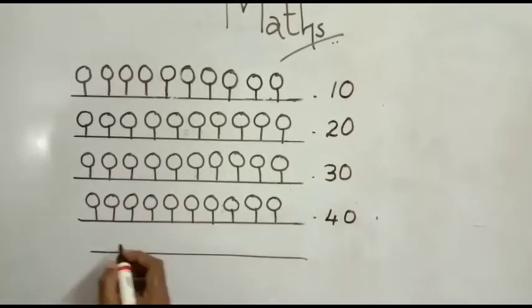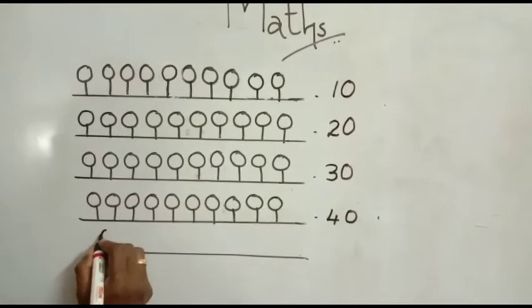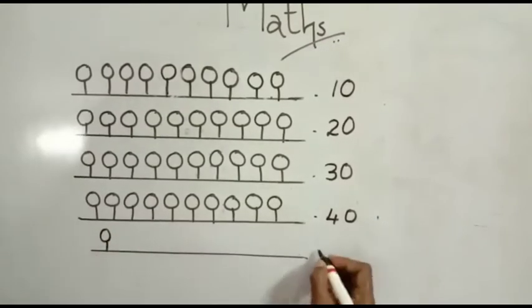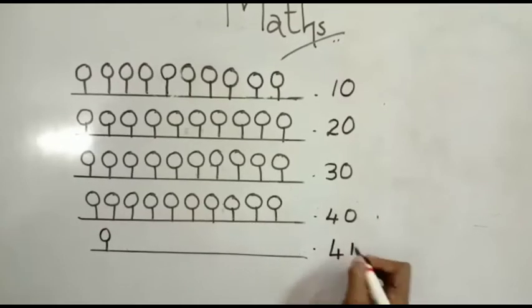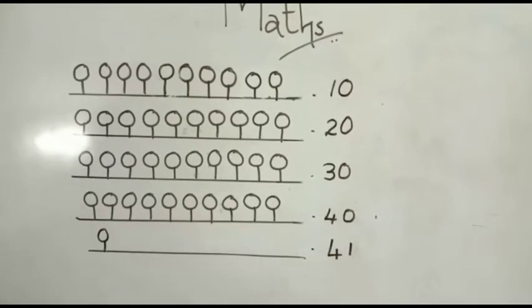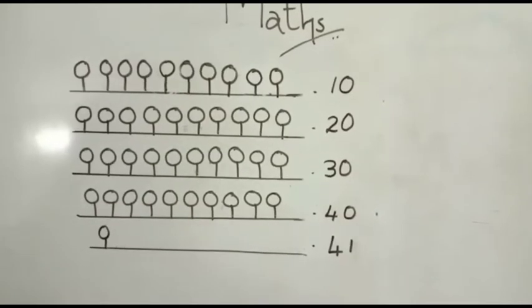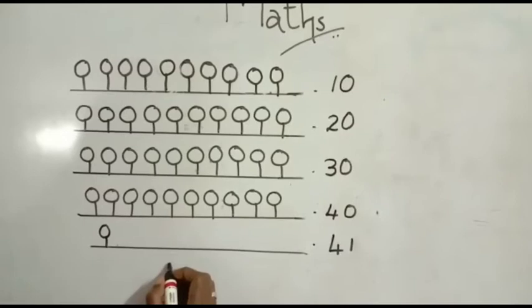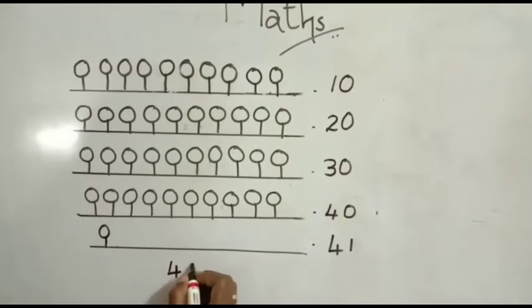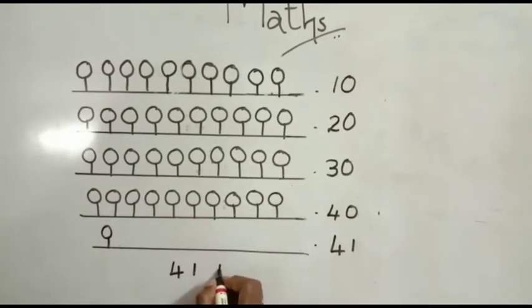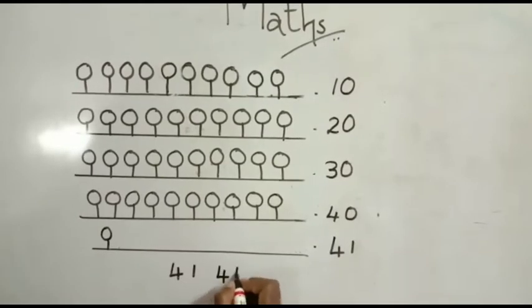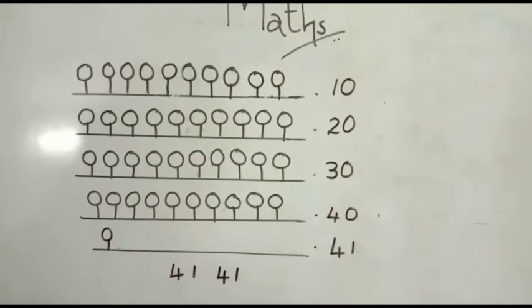40. We need to add one more. Four tens and one is 41. Here is 41. We can add 40 and 1. The number is 41. Okay, understand?